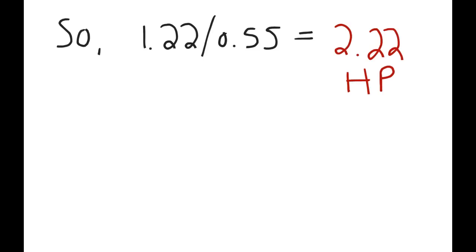So after you do the math, 1.22 horsepower divided by the efficiency, 0.55, gives you 2.22 horsepower, which is the output of the motor going into the pump. And that makes sense. You want the output of the motor going into the pump to be higher than the output of the fan because of that efficiency loss.